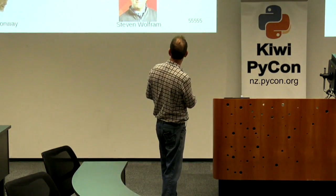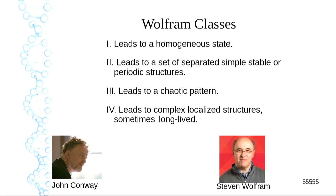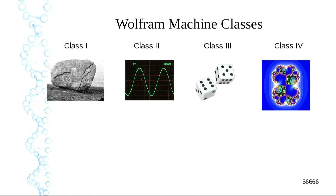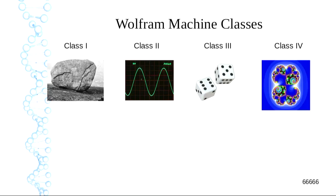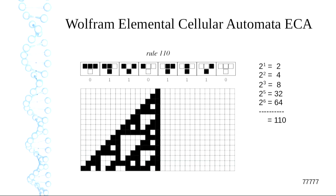Class one machines lead to a modular state — basically do nothing. Class two go to a limit cycle and just oscillate. Class three are chaotic — basically random number generators. Class four have complex structures that persist for some time. The big difference is that class four machines can in theory simulate all the other machines. Class four can simulate all the other machines.